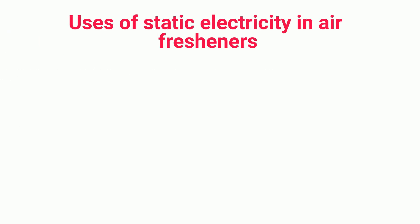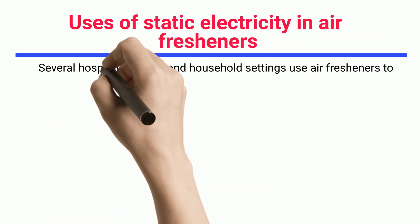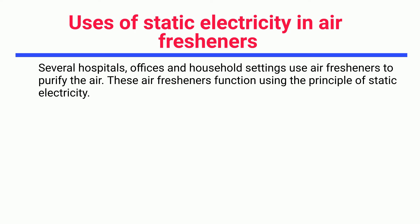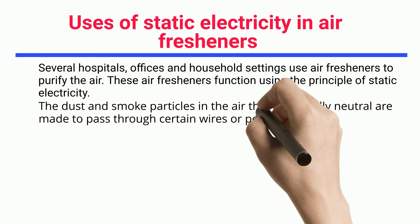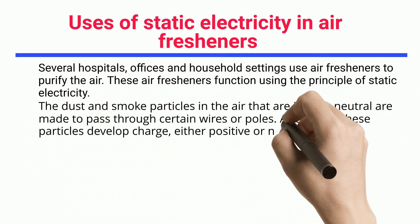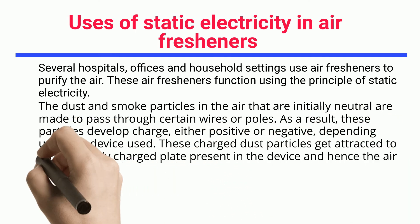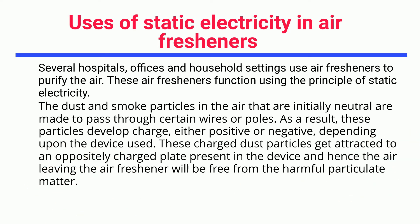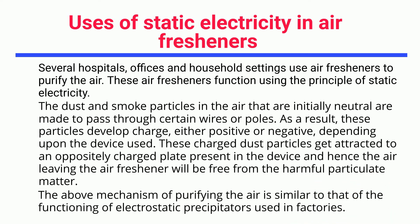Several hospitals, offices, and households use air fresheners to purify the air, which function using the principle of static electricity. Dust and smoke particles in the air, initially neutral, are made to pass through certain wires or poles, developing either a positive or negative charge depending on the device. These charged particles get attracted to an oppositely charged plate, so the air leaving the freshener is free from harmful particulate matter. This mechanism is similar to the functioning of electrostatic precipitators used in factories.